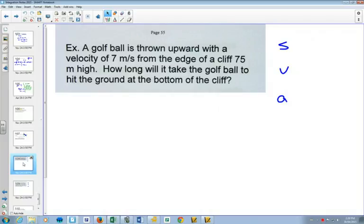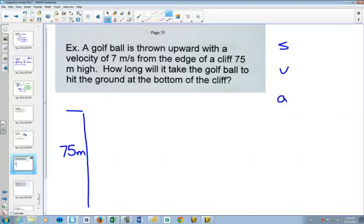All right, so now these ones, we can solve them with physics. You've got physics formulas to probably do this. Now we're going to look, how would we solve this with calculus? We've got our cliff, 75 meters tall, high. The golf ball is thrown upward with a velocity of 7 meters per second from the edge of the cliff. How long will it take the golf ball to hit the ground at the bottom of the cliff?